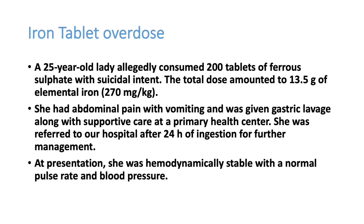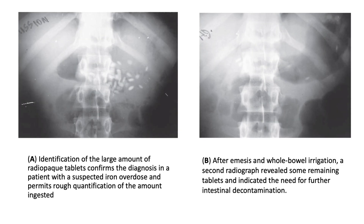The next case is a 25-year-old lady who consumed 200 tablets of ferrous sulphate — a very high dose. The patient was hemodynamically stable. An abdominal X-ray shows many radiopaque tablets in the abdomen, which is a classical picture of iron tablet ingestion. After treatment including emesis from home and whole bowel irrigation, the second X-ray shows only one or two tablets remaining in the stomach.